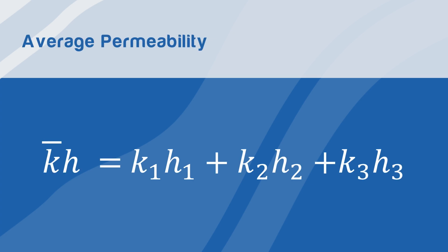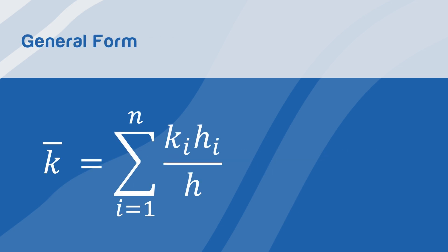The form is indeed the same as the linear system and can also be represented in the following general form. This equation can be used to estimate average permeability in a radial system where the beddings are parallel to each other.